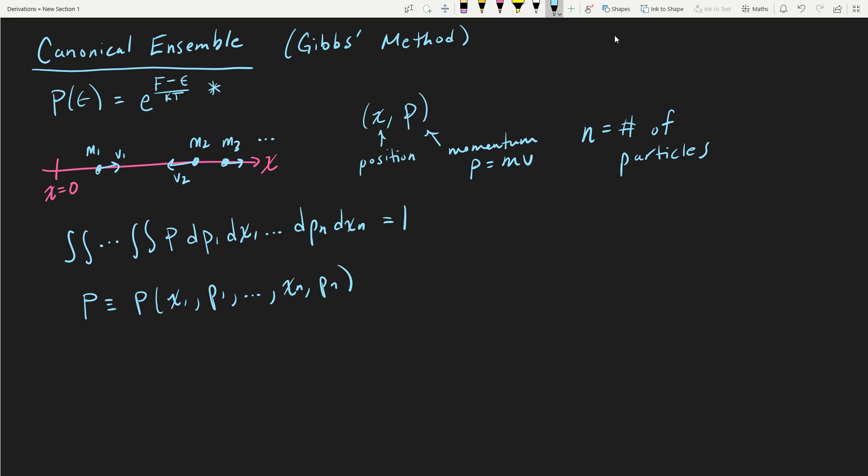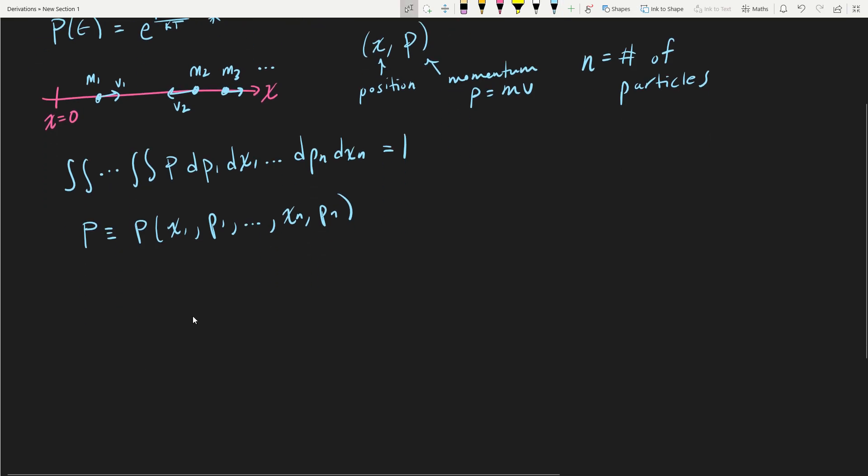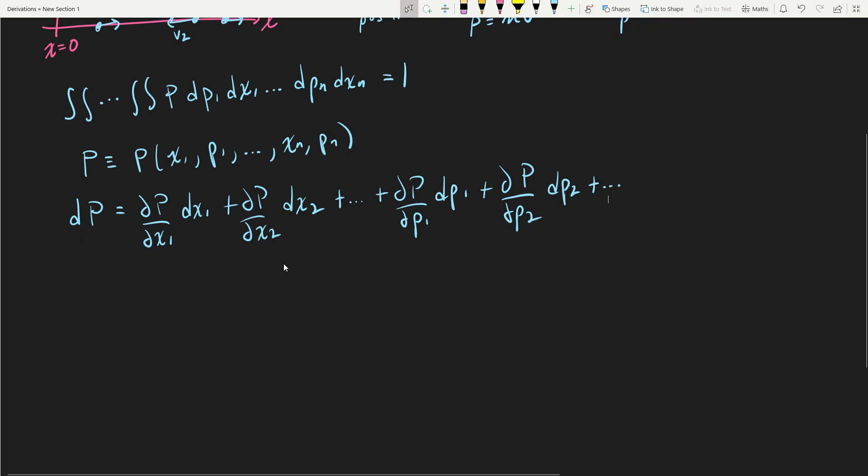So we know that this probability function capital P is a function of all these variables. The next thing we're going to do is take a differential of P and apply the partial differential chain rule. The total differential of P is going to be equal to ∂P/∂x1 dx1 + ∂P/∂x2 dx2, all the way up to n, and then ∂P/∂p1 dp1 + ∂P/∂p2 dp2, all the way up to n. This is the differential chain rule.